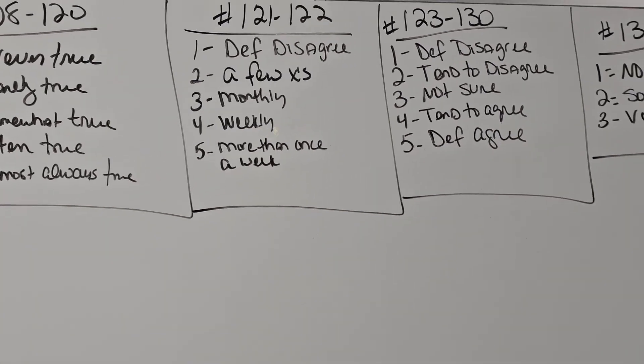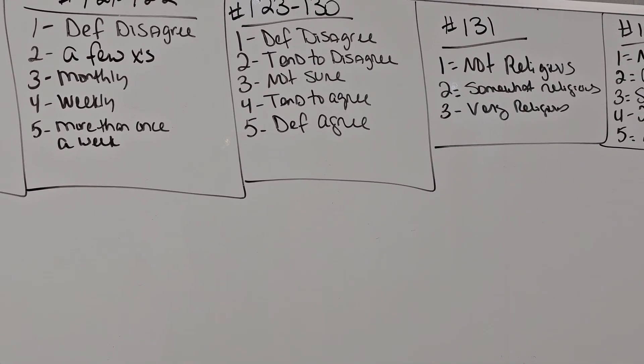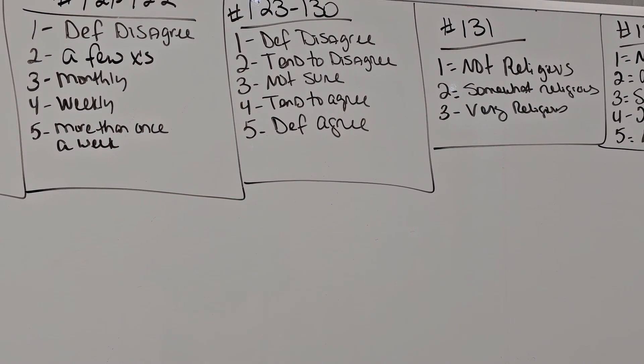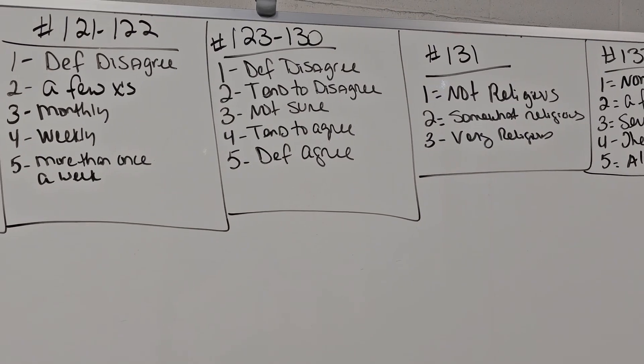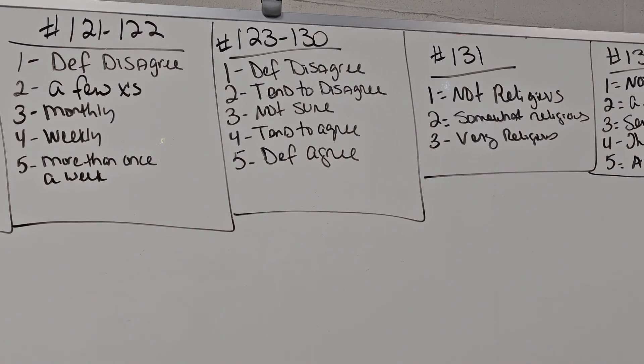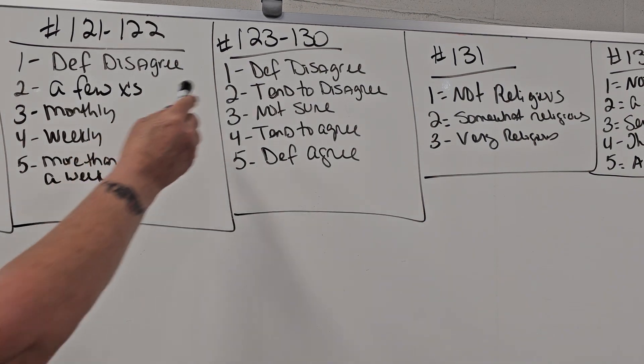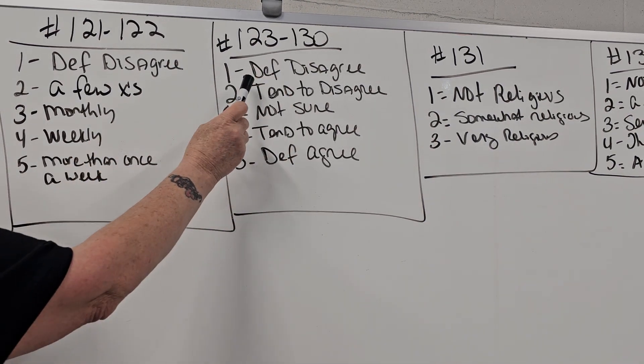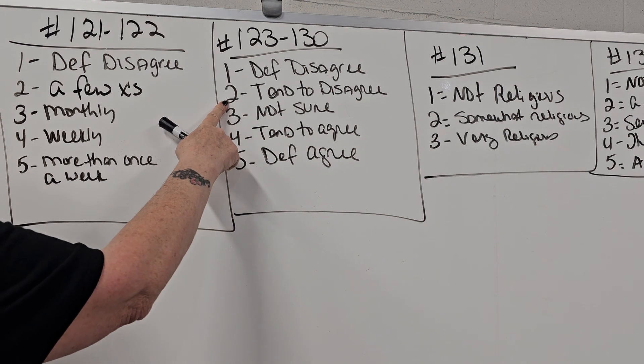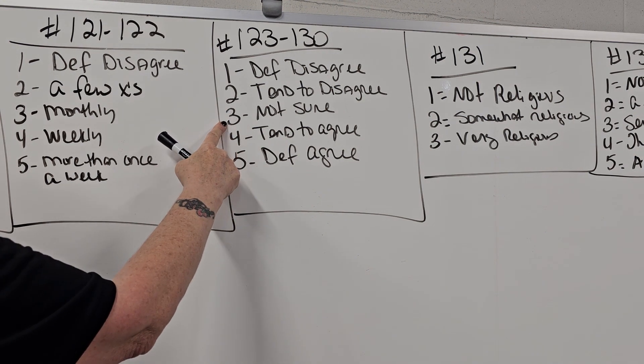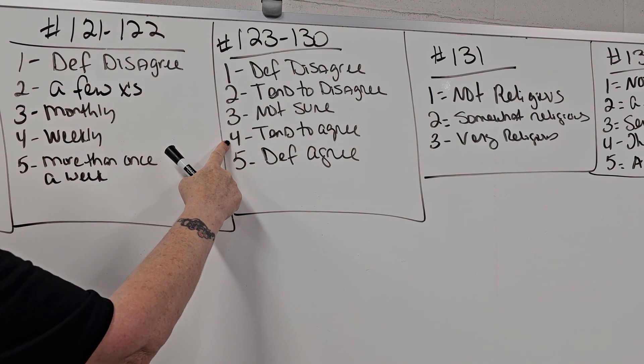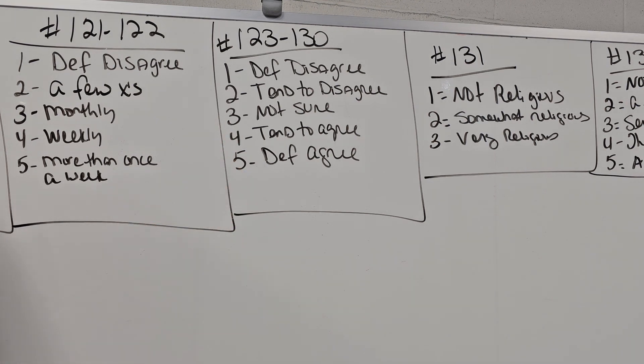Okay the answer key will change. Now we are at 123. Question 123 through 130. One is definitely disagree, two is I tend to disagree, three is I'm not sure, four I tend to agree, five I definitely agree. So the questions are how much do you agree, that's what that says.